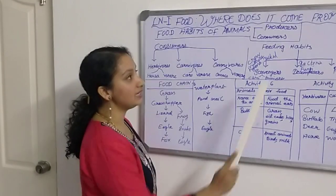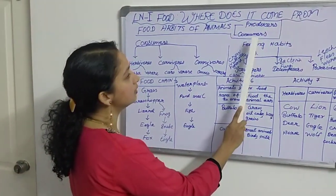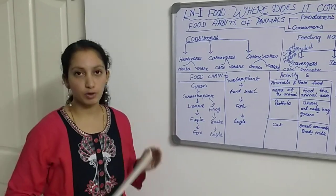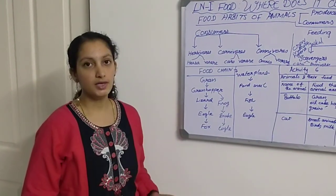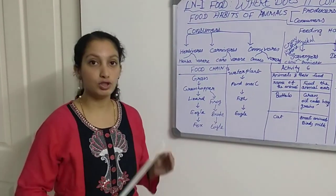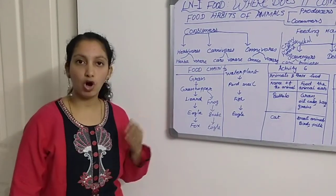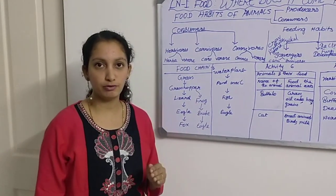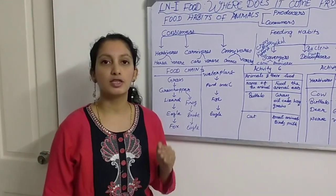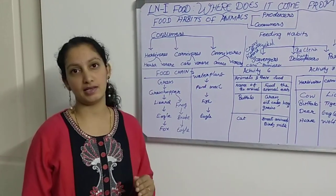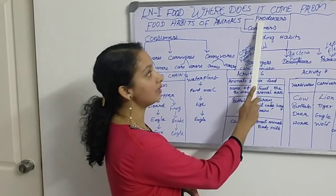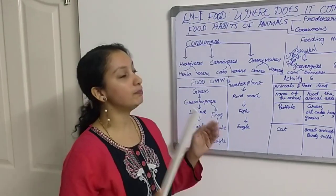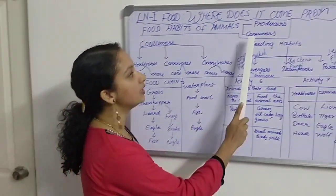Based on food habits we have two terms: producers and consumers. Producers means who is producing the food. We all know there is a particular type of plant which can produce food by the process called photosynthesis. Those are called green plants, and so green plants are named as producers.